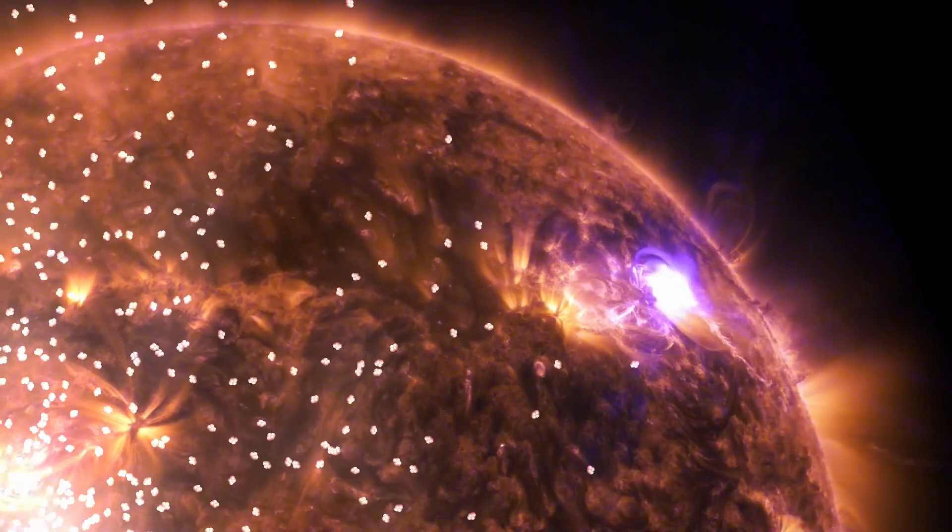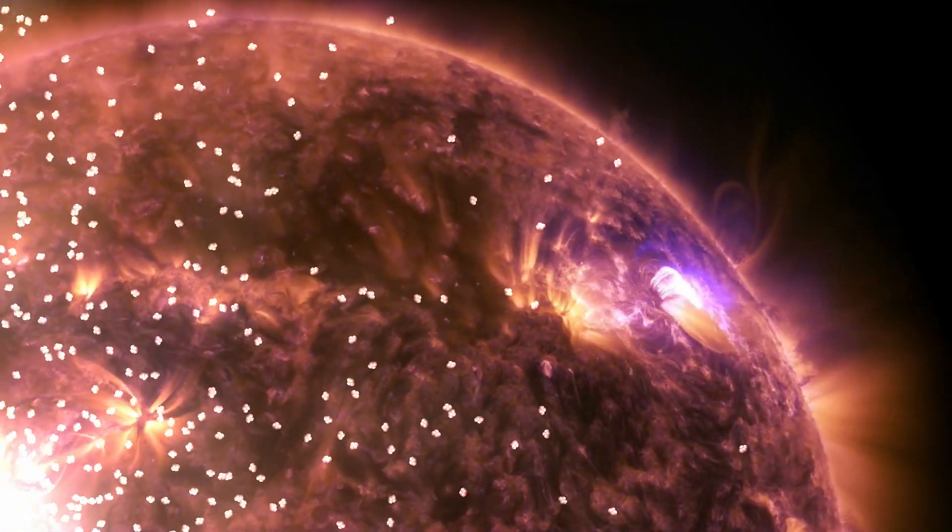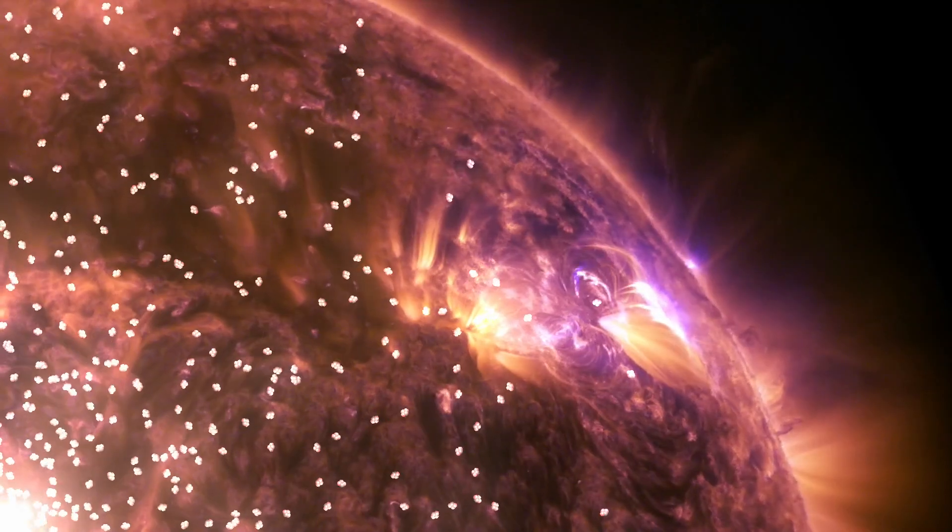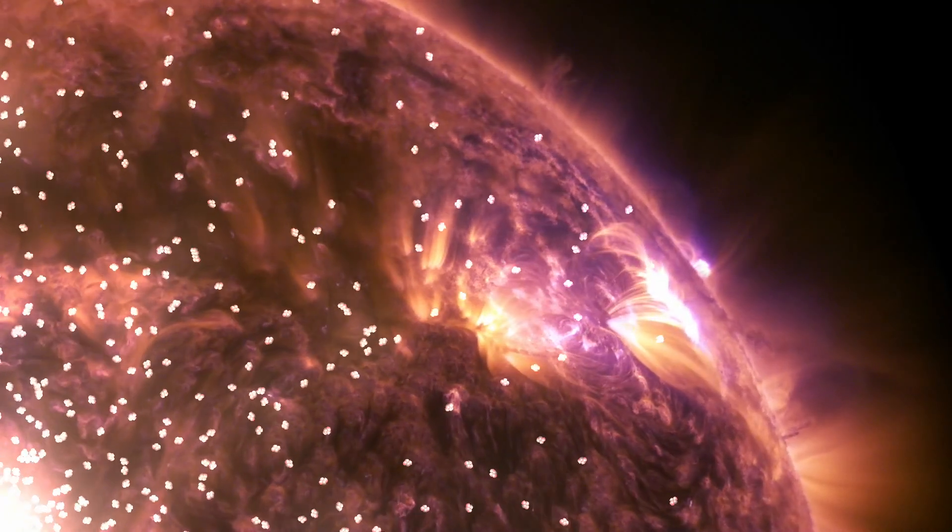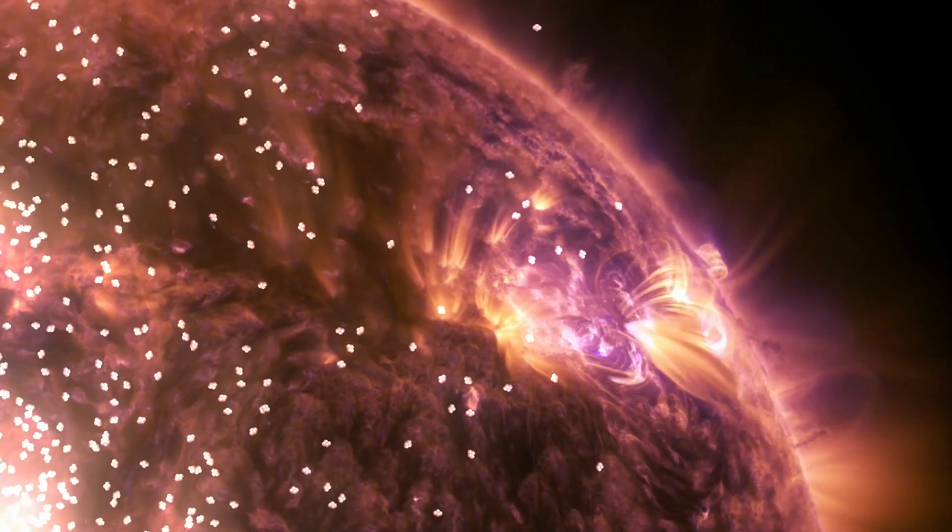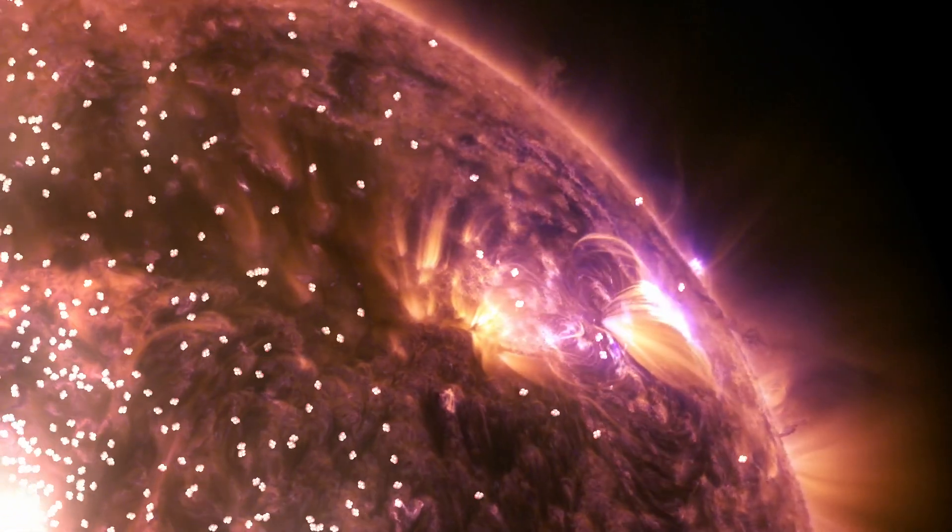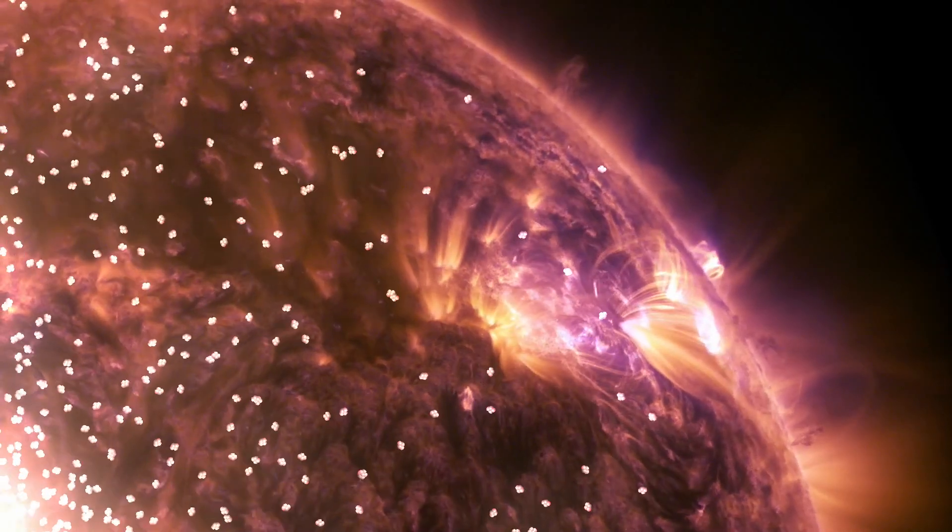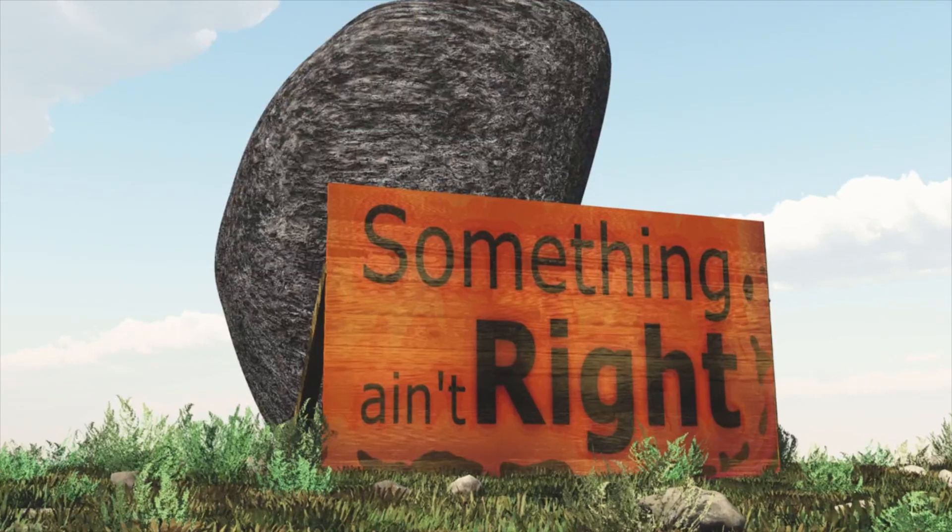Our sun, a star, also produces energy through nuclear fusion as it combines hydrogen atoms to form helium atoms. But if our sun is a giant hydrogen bomb as it's sometimes called, then why doesn't it blow apart like a hydrogen bomb? Something ain't right.